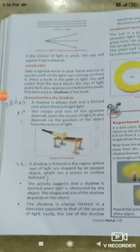A shadow is formed in the region where the rays of light is stopped, an opaque object which has a screen or surface behind it. Now the shadow is always formed in a direction opposite to the source of light. Lastly, the size of the shadow becomes smaller as it moves away from the source of light.